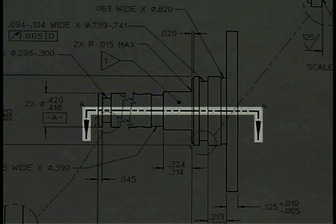A cutting plane line can also consist of thick dashes of equal length. The letters with the cutting plane line identify the section view to be found on the print.